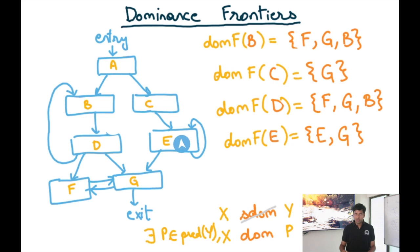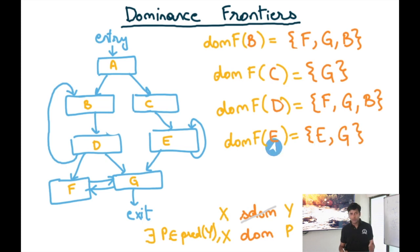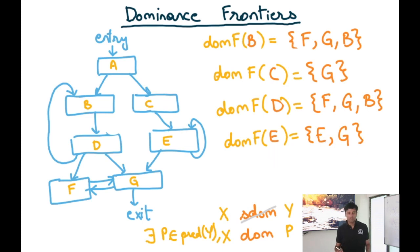Finally, looking at the dominance frontier of E: there are two outgoing edges from E, one going to G and one back to E itself. G is not strictly dominated by E, but its predecessor E is dominated by E, so G is in the dominance frontier. E itself is also not strictly dominated by E, but its predecessor E is dominated by E, so E is also in the dominance frontier. So the dominance frontier of E is {E, G}. It's interesting that E is in the dominance frontier of itself, where X, Y, and P are all E.